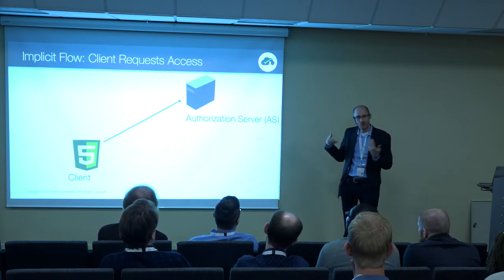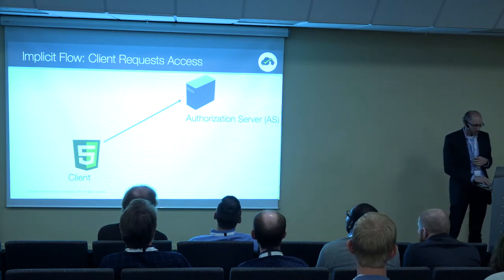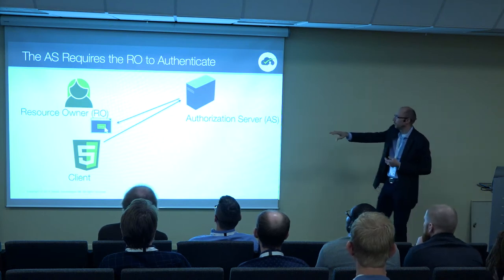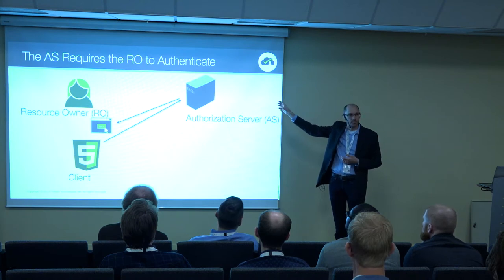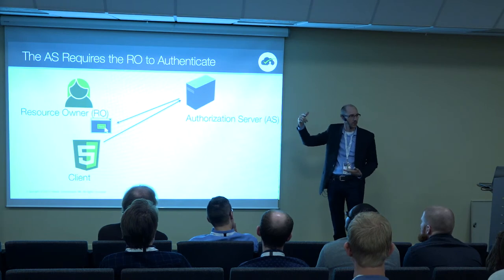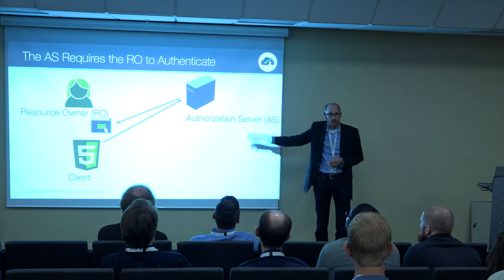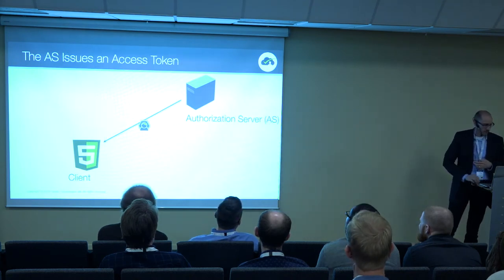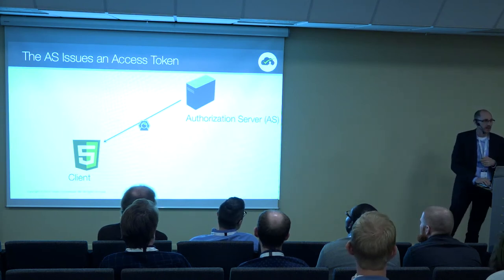The implicit flow is we just implicitly authenticate the client. The way this works is the client will ask the authorization server for a token, asking in a slightly different way to say it wants to interact this way. The user will have to authenticate by any method, and then immediately it will get back the token — not that one-time access code.